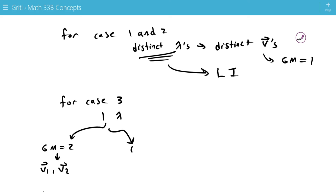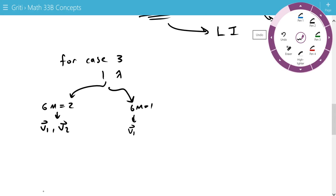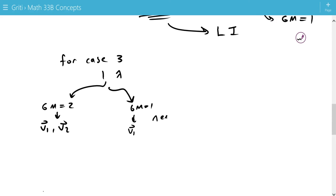Or, we could get a geometric multiplicity of 1, which means we only have one linearly independent vector, which means we need to find another linearly independent eigenvector. So, we'll go through how to find that.